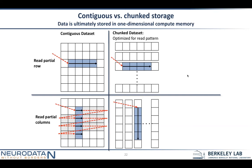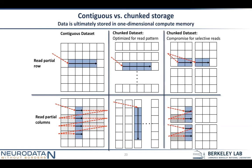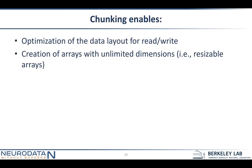If you're typically going to read data by rows, you would chunk in that dimension. If you're going to read by column, you would chunk in the opposite dimension. You can also chunk in higher granularity, but this will have implications for performance on read. Chunking is necessary for optimizing data layout for read and write, but also if you want to make data sets resizable so you can continue to append to them, you have to have chunking. That's something to think about in the next section.